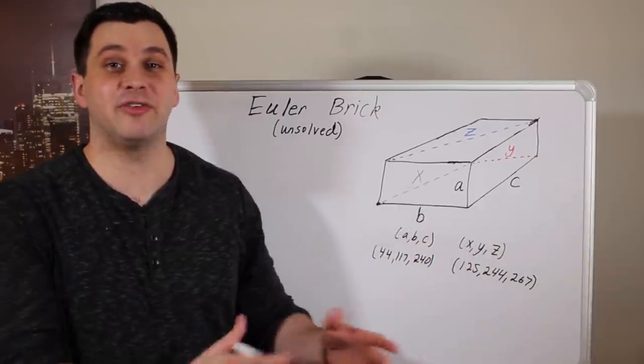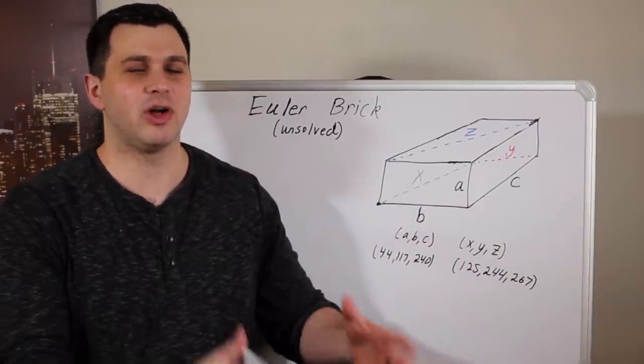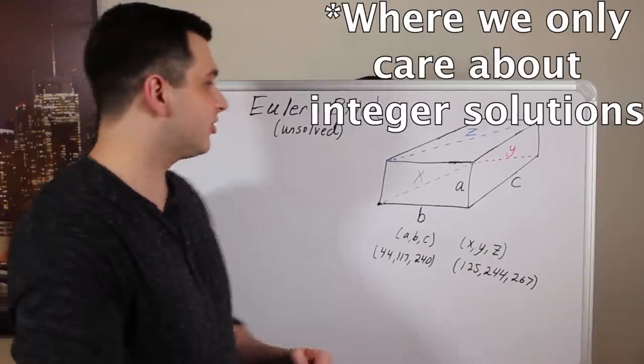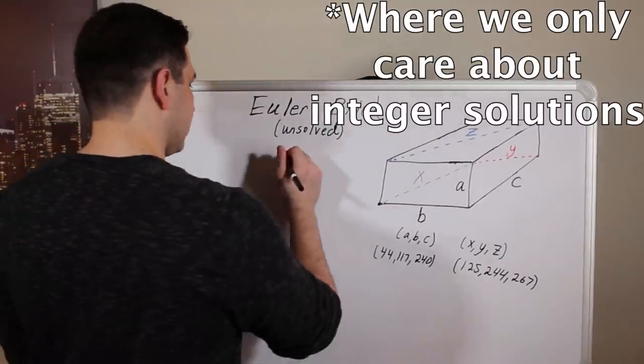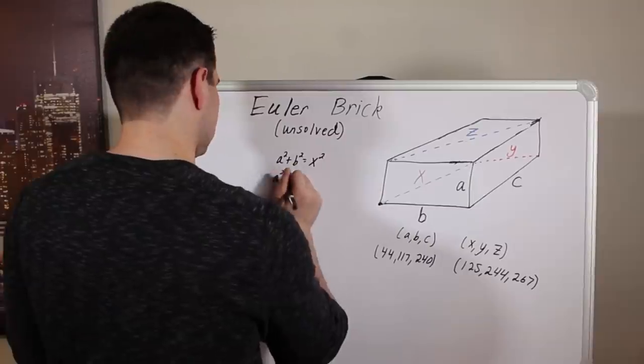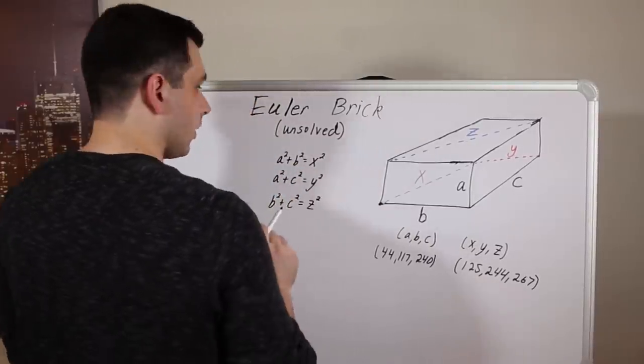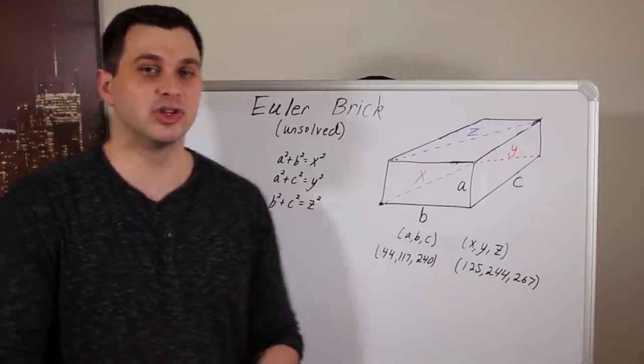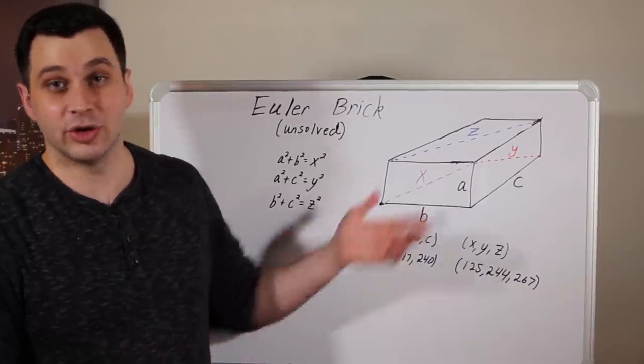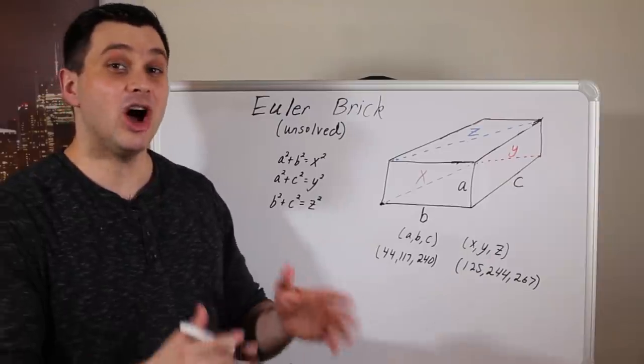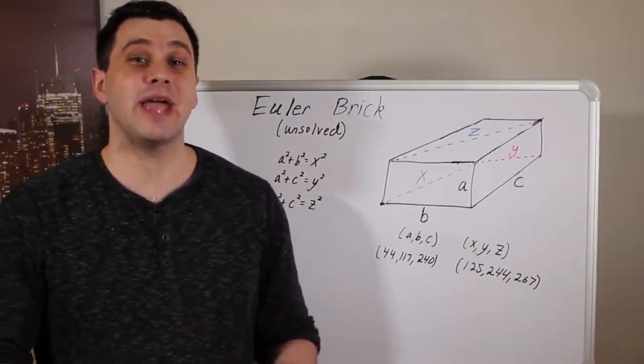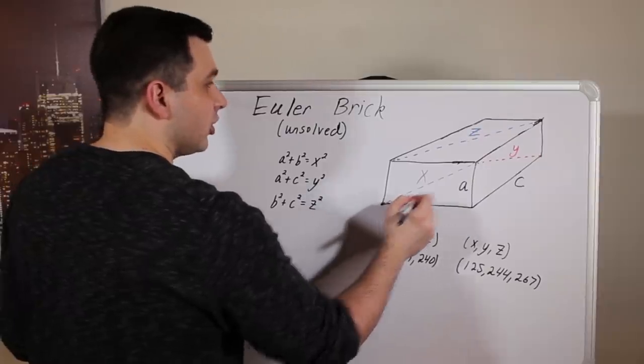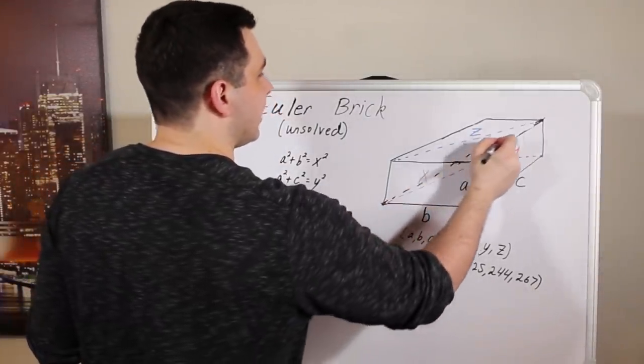Now, the equations that represent this are called diophantine equations, which are just polynomial equations that only have integer solutions. And, in this case, those look like this. So, we have three Pythagorean theorems, and any integer solutions to these equations yield an Euler brick. Now, the unsolved part of this comes in when we add a fourth diagonal, one that goes from the bottom left corner to the top right. I'll draw that in, and I'm just going to call that D.